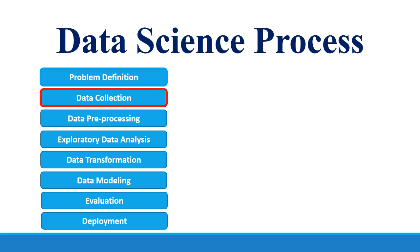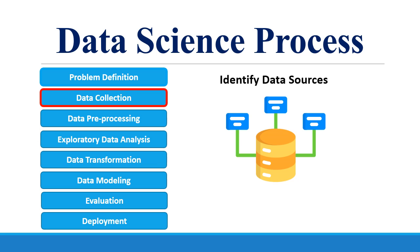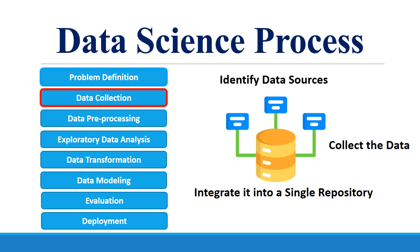The second stage is data collection. First you have to identify the data sources from where you have to collect the data. The data could be collected internally or externally. If your organization has the data required, you can collect it from your organization. But if that is not the case, you will go for an external organization or for publicly available data sets. Once you identify the data sources, you have to collect all the data required for your project, then integrate it into a single repository.